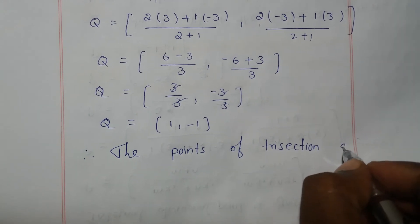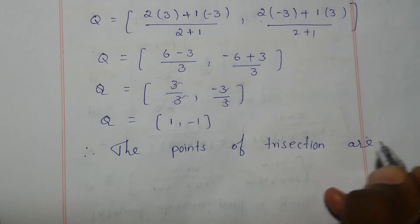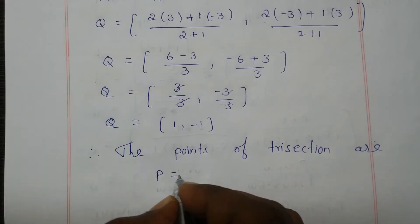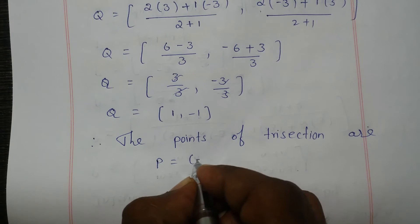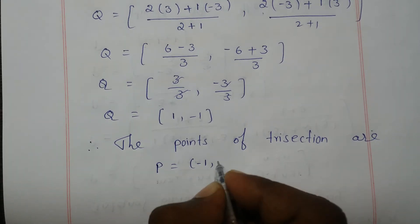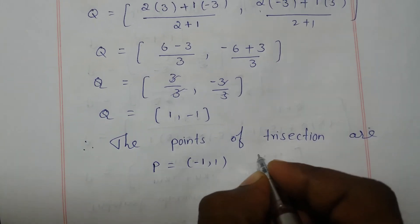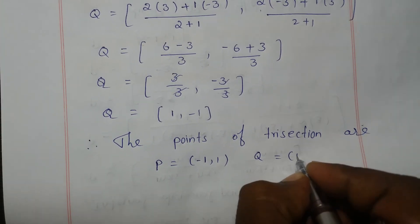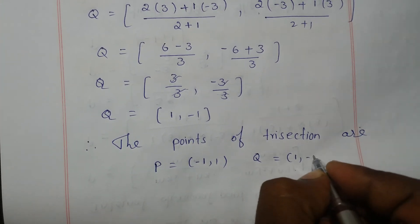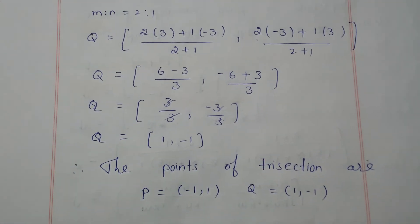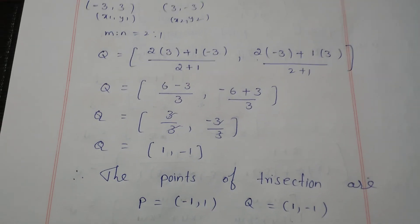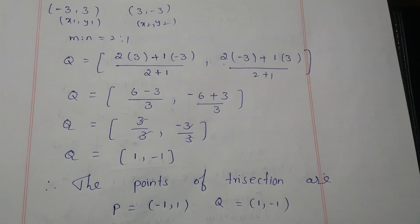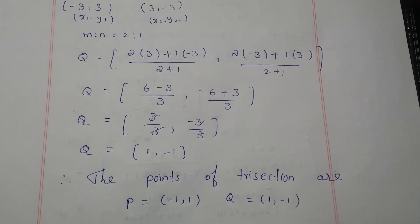Therefore, the points of trisection are P = (-1, 1) and Q = (1, -1). Thanks for watching. Please subscribe to my channel and click the bell button for regular updates.